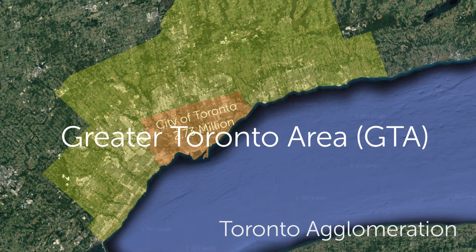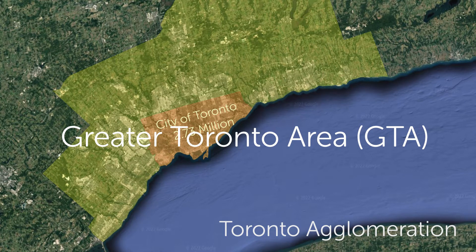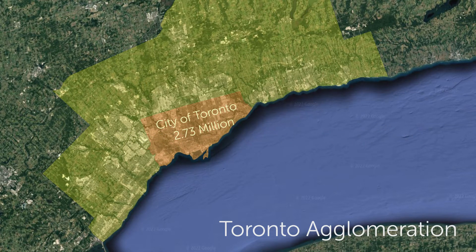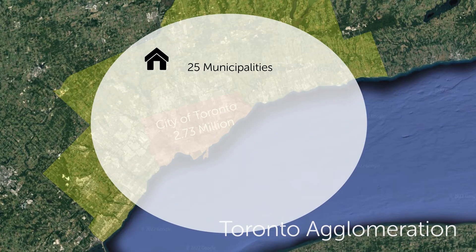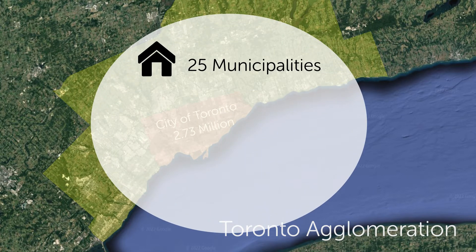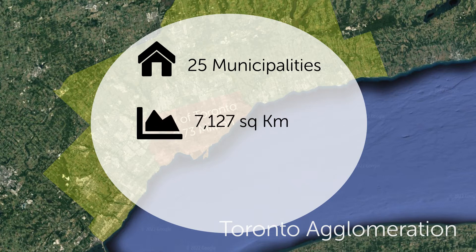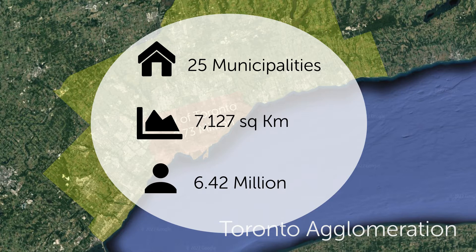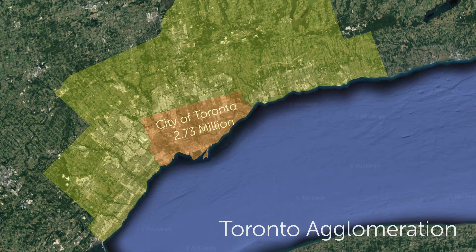This is known as the GTA, or the Greater Toronto Area, and they are actually a bunch of separate municipalities, each having a separate municipal government. The GTA encompasses 25 municipalities spread out in an area of 7,127 square kilometers, with a population of 6.42 million people, making Toronto actually the fourth largest urban area in North America, just after Chicago.